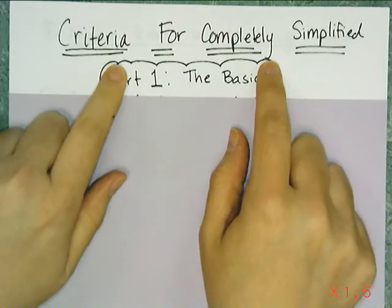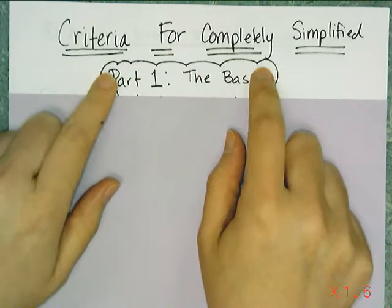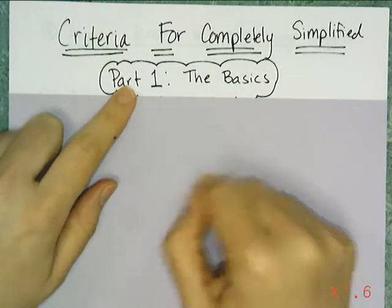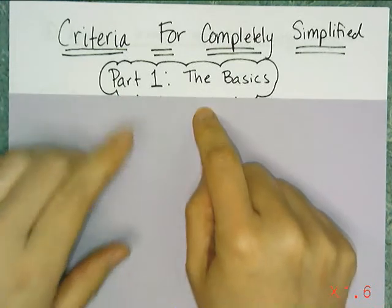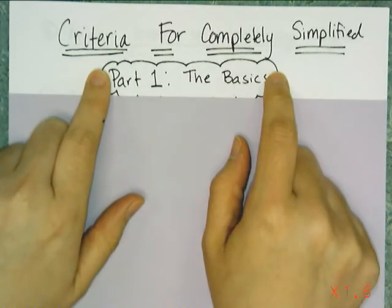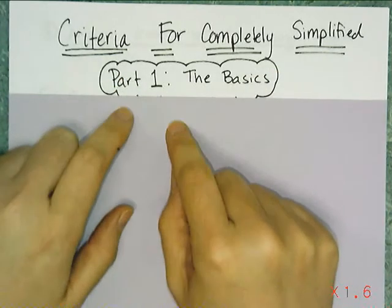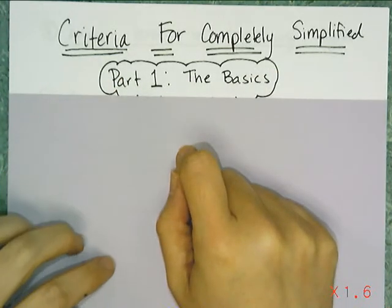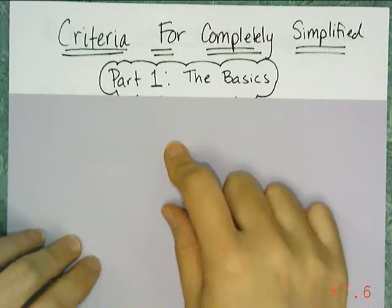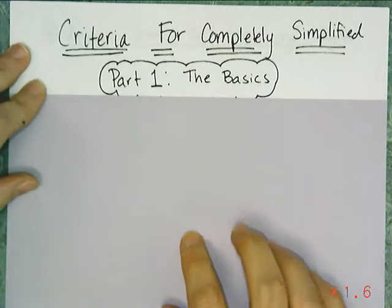So when I say criteria for completely simplified, I mean how your answers need to look when you're done and box it off happy face. Now I'm not going to talk about the properties to achieve completely simplified answers. That's going to be in another video. This is just what you have to achieve. And these are the things that are posted on my wall, and I gave you a handout when we talked about leaving answers as improper fractions.